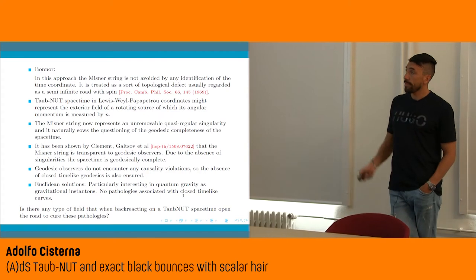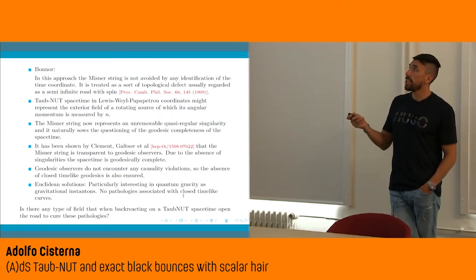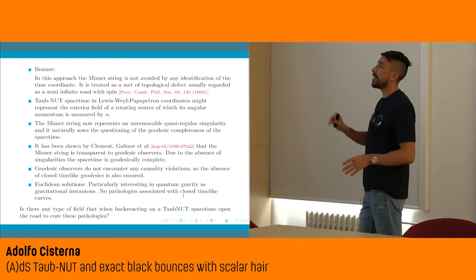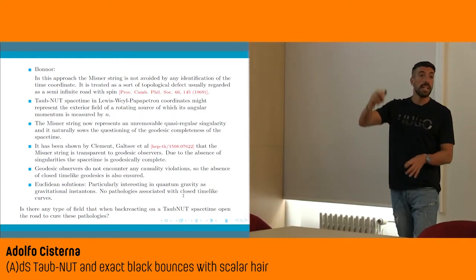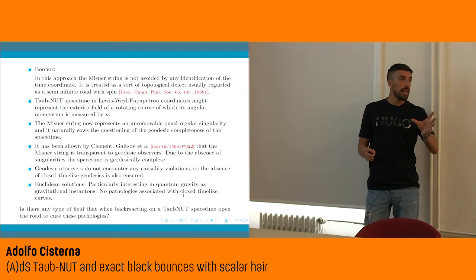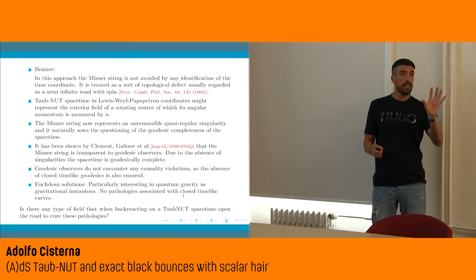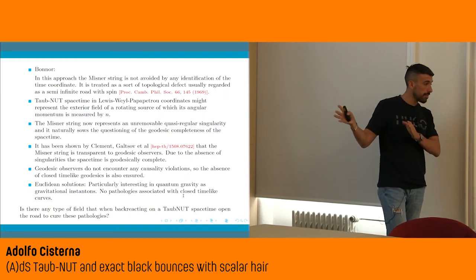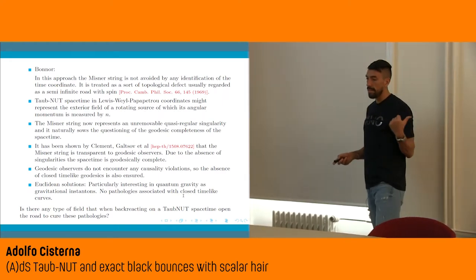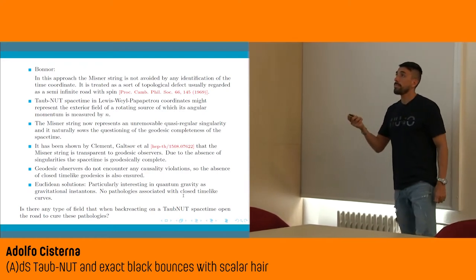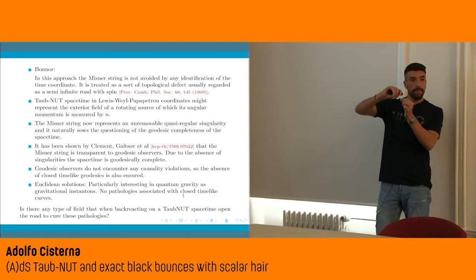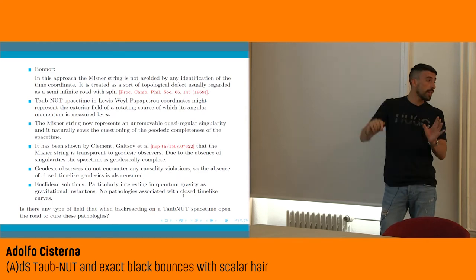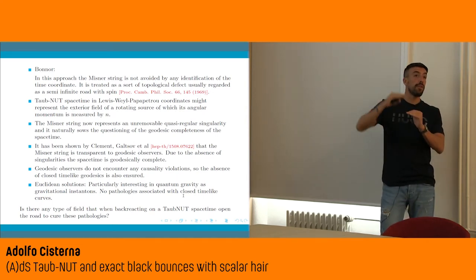So in Bonner's approach, Misner strings are not avoided by any identification of the time coordinate, and they are treated as a sort of topological defect, usually interpreted as a semi-infinite rod with a spin. Let us remember that the Taub-NUT spacetime is stationary, and there is some kind of cross-term that induces us to think the solution is rotating — because we have this dt dφ term in the metric.